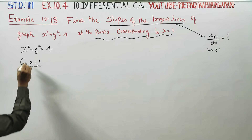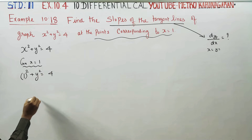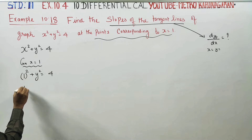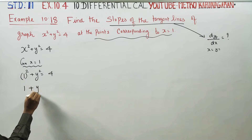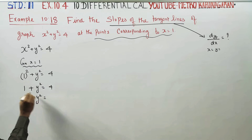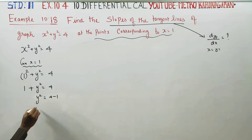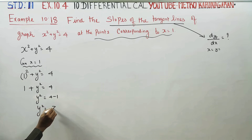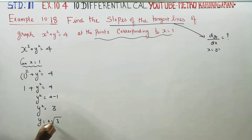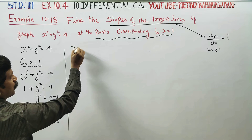Substituting x=1: one squared plus y squared is equal to 4. So 1 plus y squared is equal to 4. Therefore y squared is equal to 4 minus 1, which is 3. So y is equal to plus or minus root of 3. You will be getting two points: (1, √3) and (1, -√3).